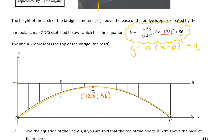Now it says line AB, which is here on top, represents the road. So the bottom of the bridge is the parabola, and then above that is the road.